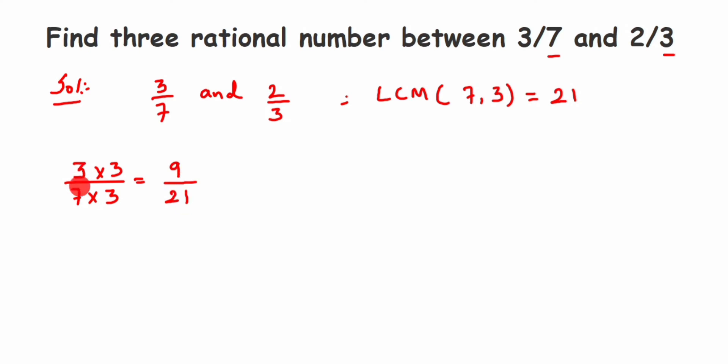The next number we have is 2/3. Again we want the denominator to be 21. So with 3, what should we multiply to get 21? It's 7. So multiply 7 in the numerator and in the denominator. We'll get 14/21.